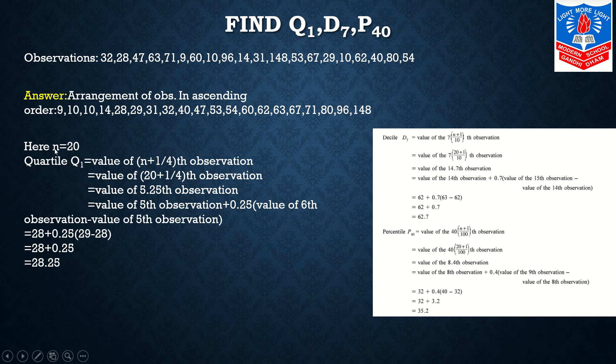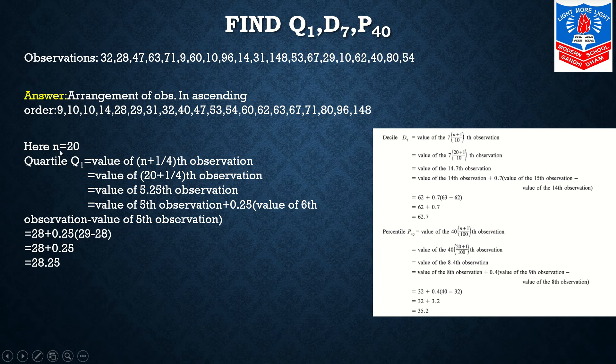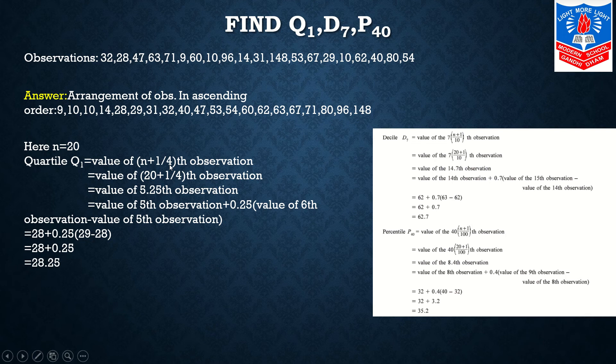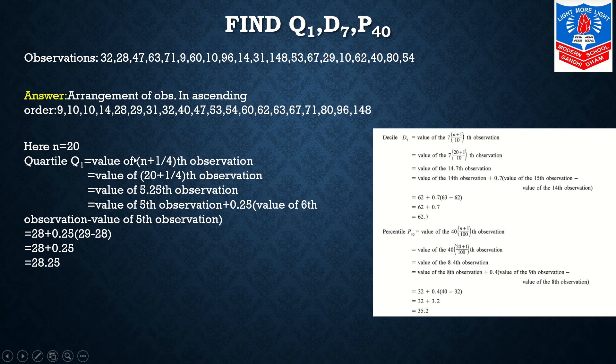Now we start with our main calculation part. N is 20. If you count, you will see that your N is 20. I start with the calculation of first quartile, that is Q1: value of (N+1)/4th observation formula. Quartiles divide into 4 different parts, so in the denominator we always have 4.